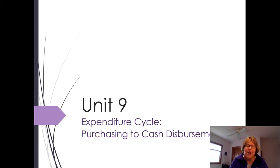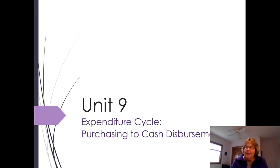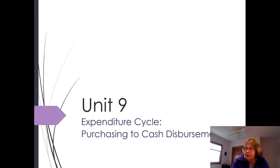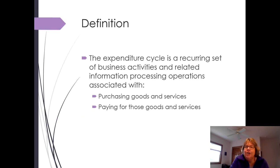Time for a new chapter. The last chapter we're going to go over this semester is the expenditure cycle. This has to do with everything about buying stuff that we would then turn around and sell, assemble, or put together — and this also includes services. The expenditure cycle is everything associated with purchasing goods and services and paying for them.